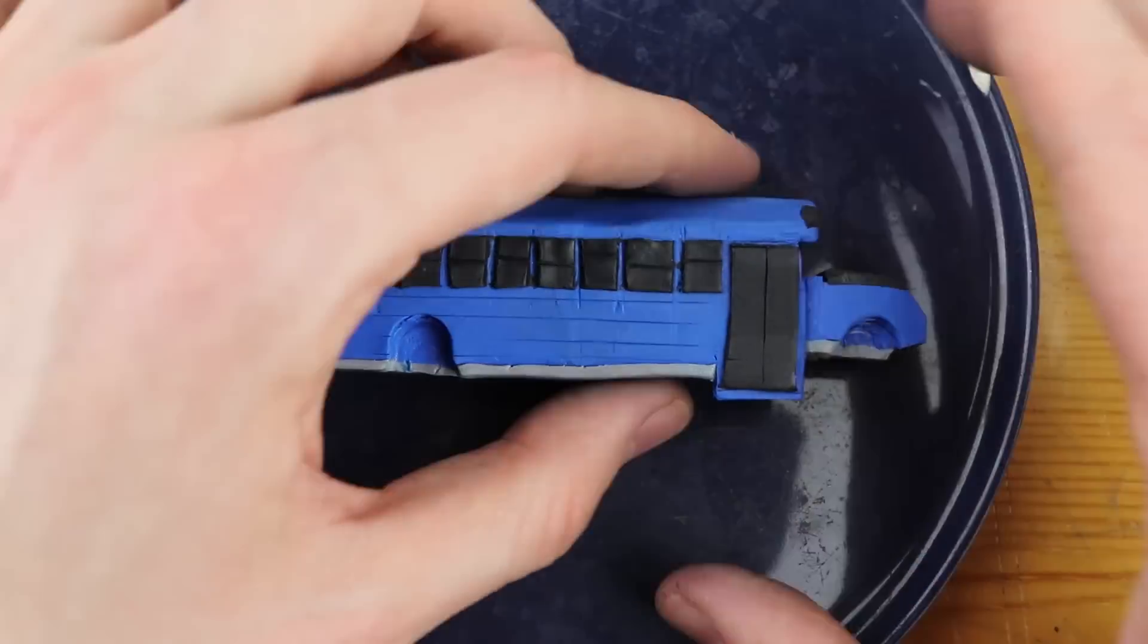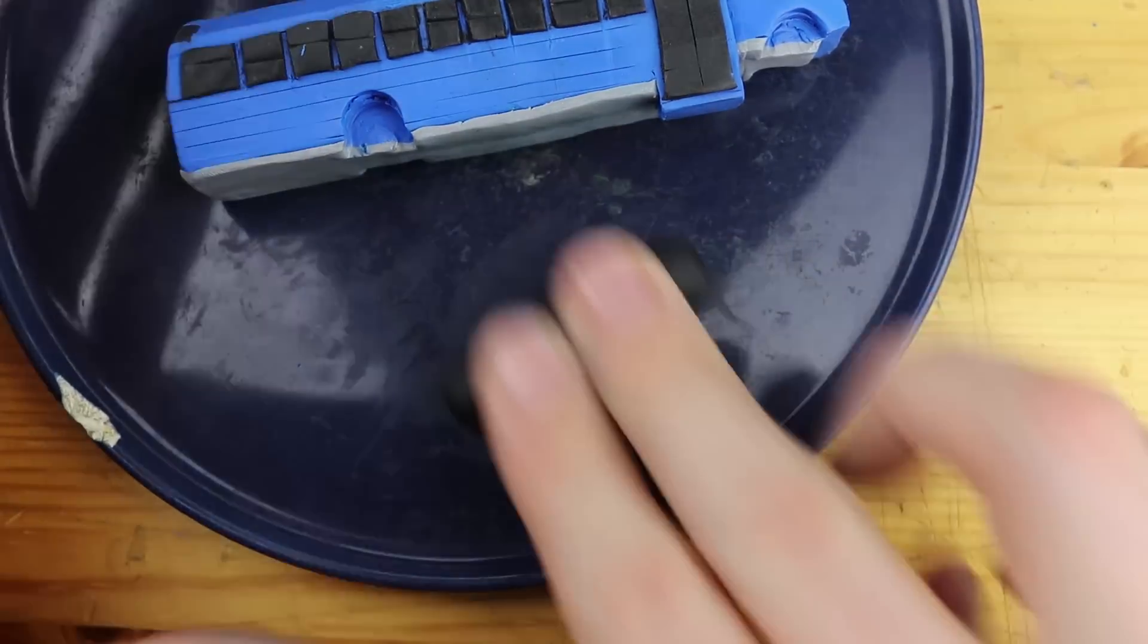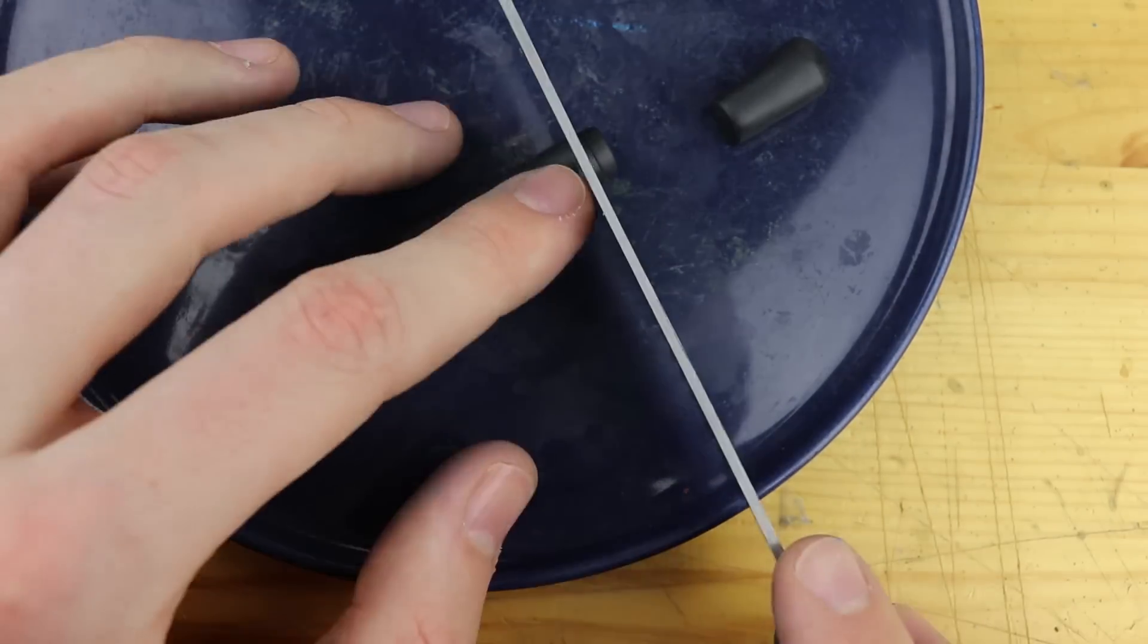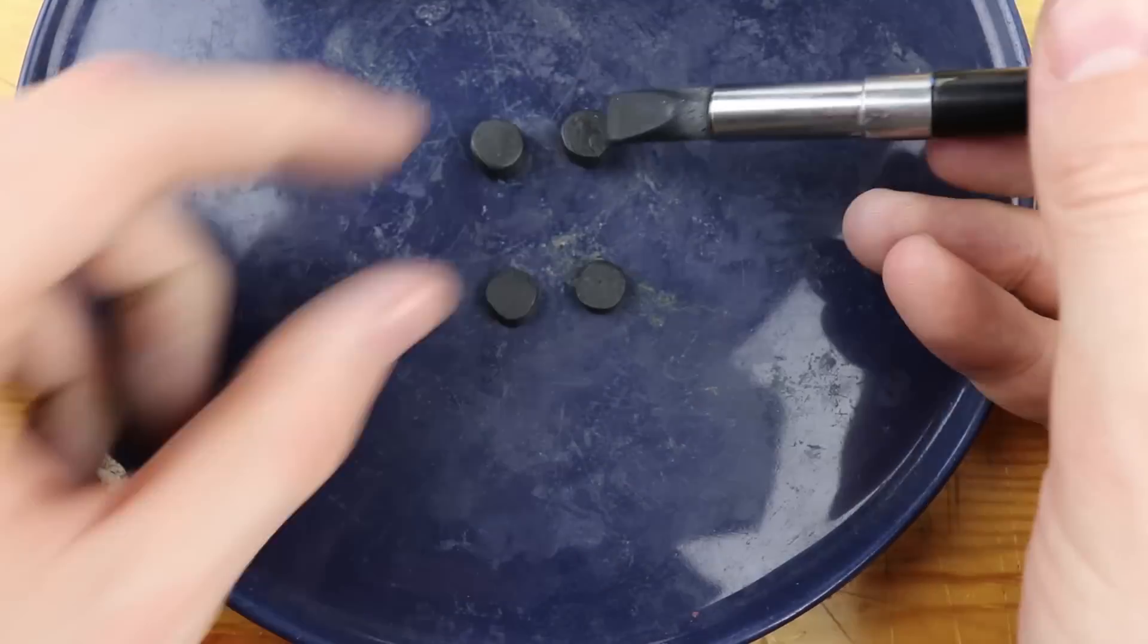Yeah, this is just a thin layer of black clay for the windows and also for the door on both sides. And now we will work on the wheels. I was looking forward to create them.